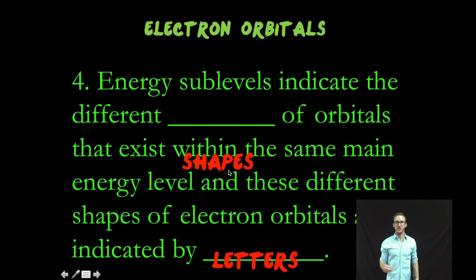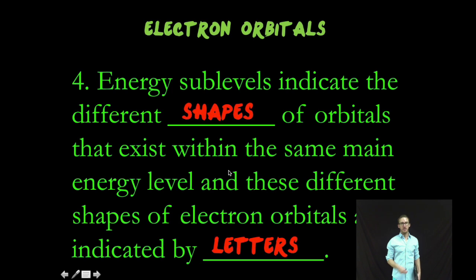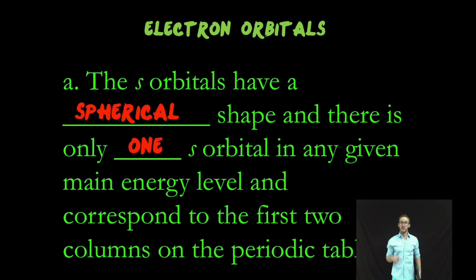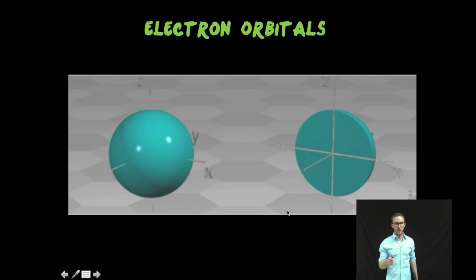Now, within those main energy levels, we have energy sublevels. And those sublevels indicate the different shapes of orbitals that exist within the same main energy level. And those different shapes of electron orbitals, or sublevels, are indicated by letters. The s orbitals have a spherical shape. And there's only one s orbital in any given main energy level. And as we learn to use our periodic table to tell us more about orbitals, you should note that the first two columns on the periodic table correspond to the two electrons that can fit in that one s orbital. Here's a visual for what an s orbital looks like. It's a sphere.